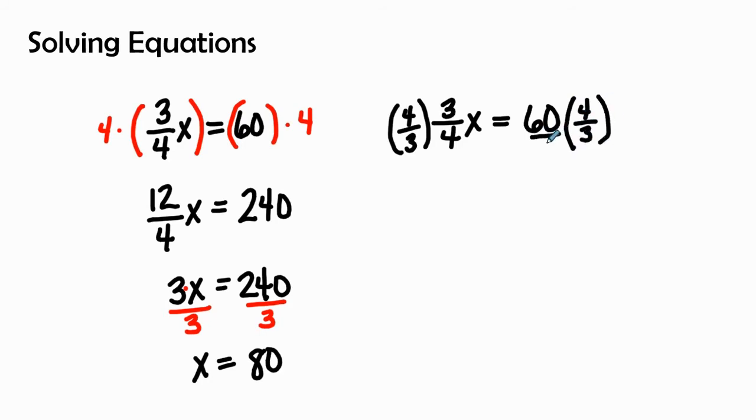Therefore I'll put 60 over one, doesn't change its value. So I could see four gets canceled out with this four because it goes into each once. Three goes into three one time, leaving me with x by itself. Then I can look at 60 times four is 240.